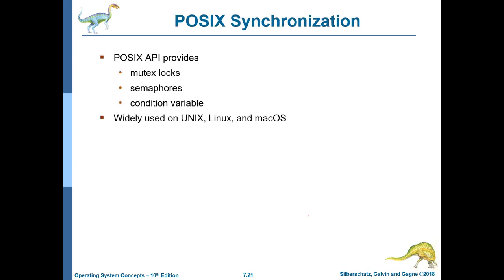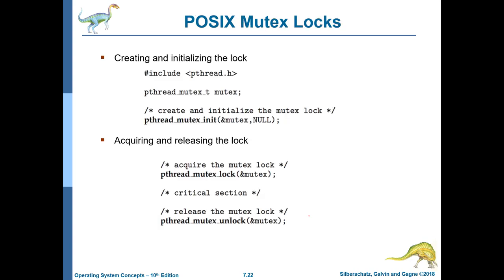POSIX operating systems — Unix, Linux, Mac OS — support mutex, semaphore, and condition variables. In pthreads, the most popular threading implementation on Linux, using mutexes is easy: you initialize a mutex by providing a pointer to it, and acquiring and releasing is simply pthread_mutex_lock and pthread_mutex_unlock, with the pointer to the mutex data structure as the argument.